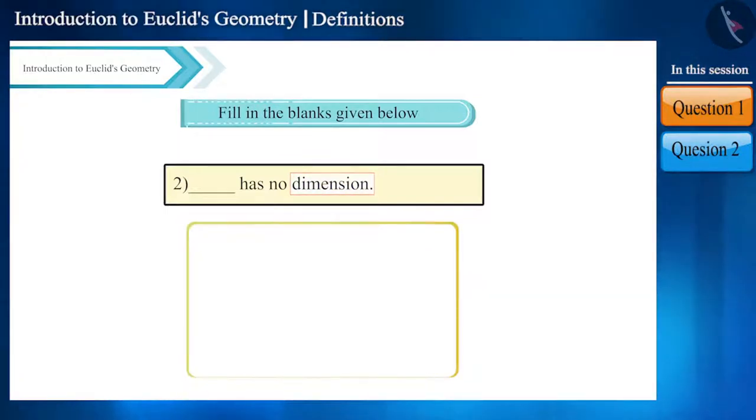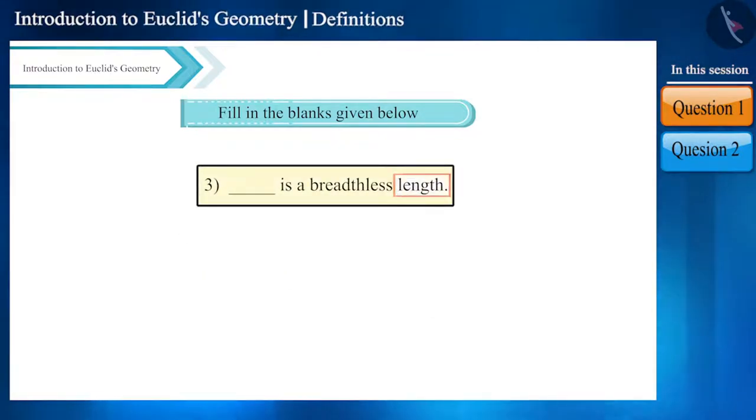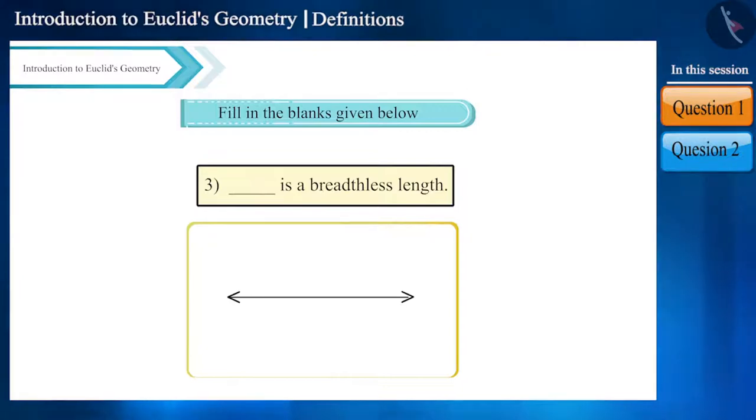A point has no dimension, so the answer is point. In the third blank we are talking about breathless length - that is, something that only has length and no breadth. According to Euclid's definition, lines are breathless length, so the answer is line.